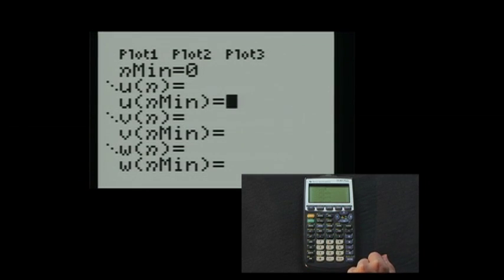So, if you choose to represent the initial value of your system as a sub 0, then you want to set nmin to 0. Notice that u of nmin appears below u of n.